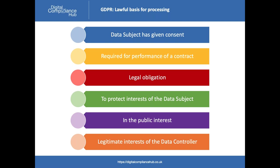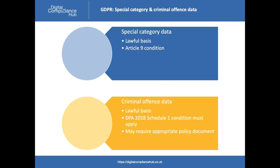Those are the lawful bases for processing personal data generally. For special category data and criminal offence data, additional rules apply. You need both a lawful basis and a separate condition. For special category data, the Article 9 conditions of GDPR set out another set of rules — there are about 15 conditions, ranging from explicit written consent to processing in the realms of employment or health services. So if you're processing special category data, two layers of justification are required.